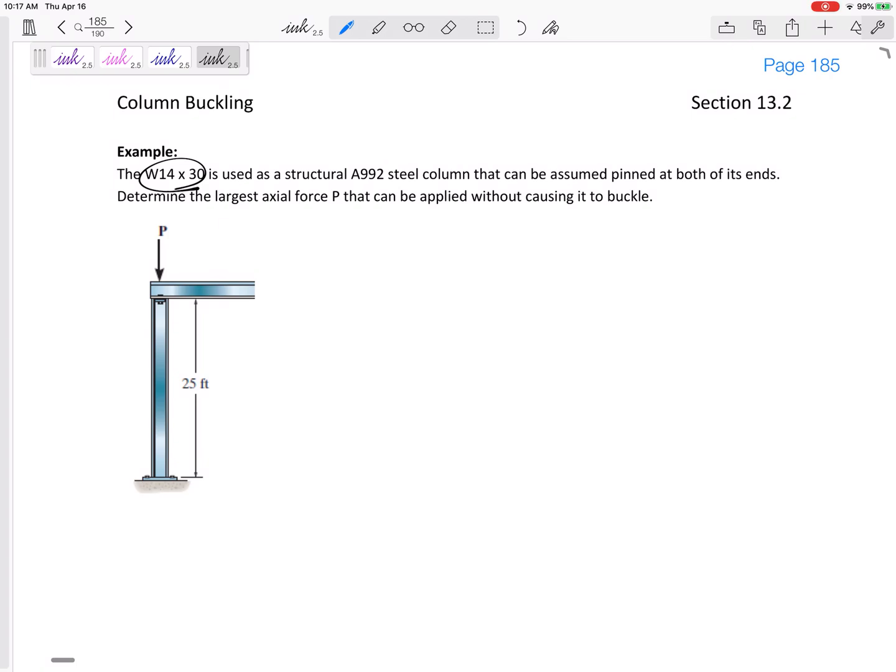Sometimes in the back of the book, they will tell you all the dimensions, all the values. For this one, this W14 by 30, from the back of the book, and we are in English units, the area of this cross section is 8.85 inches squared.